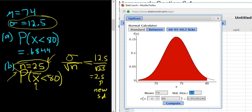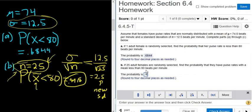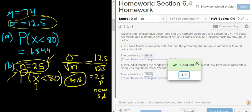There it is, 0.9918. So 0.9918. Let's type it in. 0.9918. 0.99, whoops, 0.9918. Okay, good job.